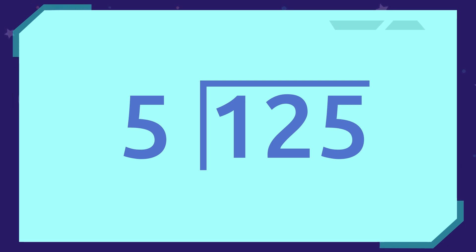To start long division, we have to see how many digits of the dividend we have to use. The rule is that the number of the dividend we are going to divide has to be equal to or greater than the number of the divisor.